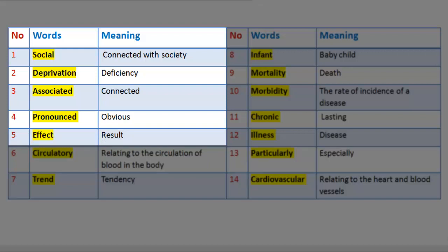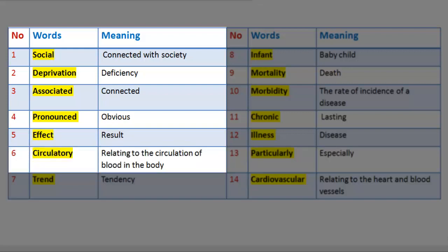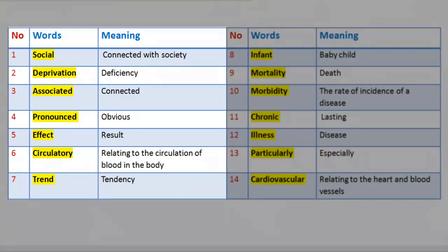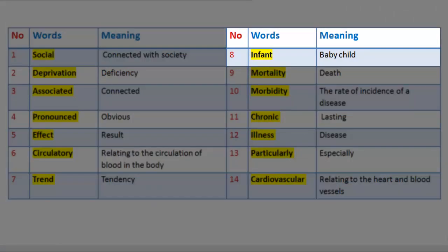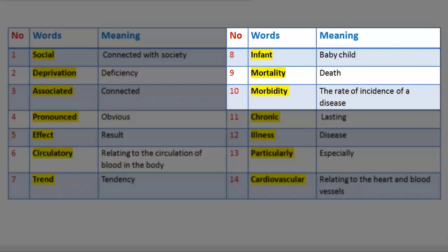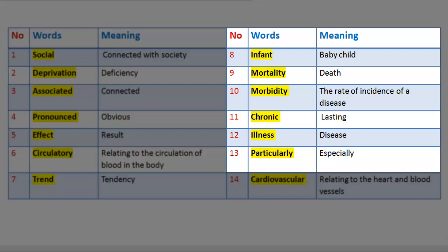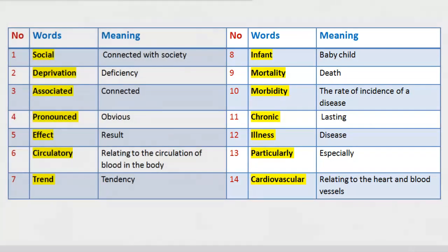5. Word: Effect — Meaning: result. 6. Word: Circulatory — Meaning: relating to the circulation of blood in the body. 7. Word: Trend — Meaning: tendency. 8. Word: Infant — Meaning: baby/child. 9. Word: Mortality — Meaning: death. 10. Word: Morbidity — Meaning: the rate of incidence of a disease. 11. Word: Chronic — Meaning: lasting. 12. Word: Illness — Meaning: disease. 13. Word: Particularly — Meaning: especially. 14. Word: Cardiovascular — Meaning: relating to the heart and blood vessels.